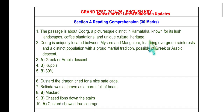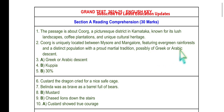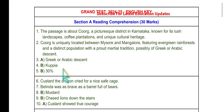Question 2: What is special with the location and people living there? Coorg is uniquely located between Mysore and Mangalore, featuring evergreen rainforests and a distinct population with a proud martial tradition, possibly of Greek or Arabic descent. Question 3: The people of Coorg are possibly of Greek or Arabic descent — easily lifted from the given paragraph. Question 4: An embroidery waist belt worn by the Kodavus is known as Kupia, as explained during the online video lessons.